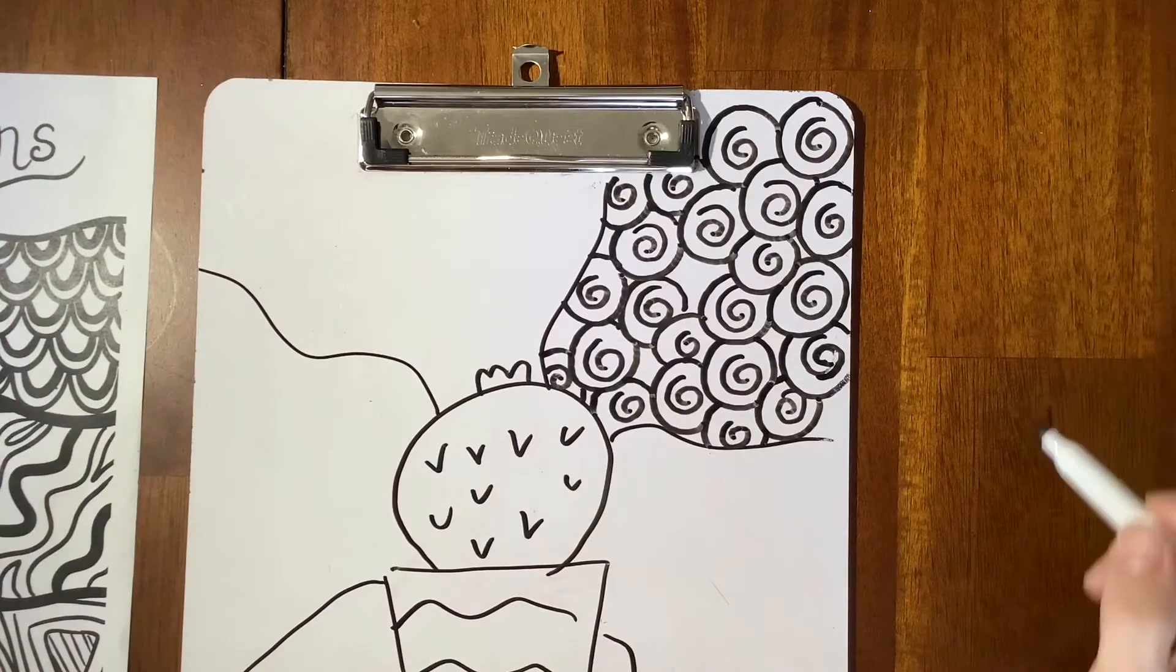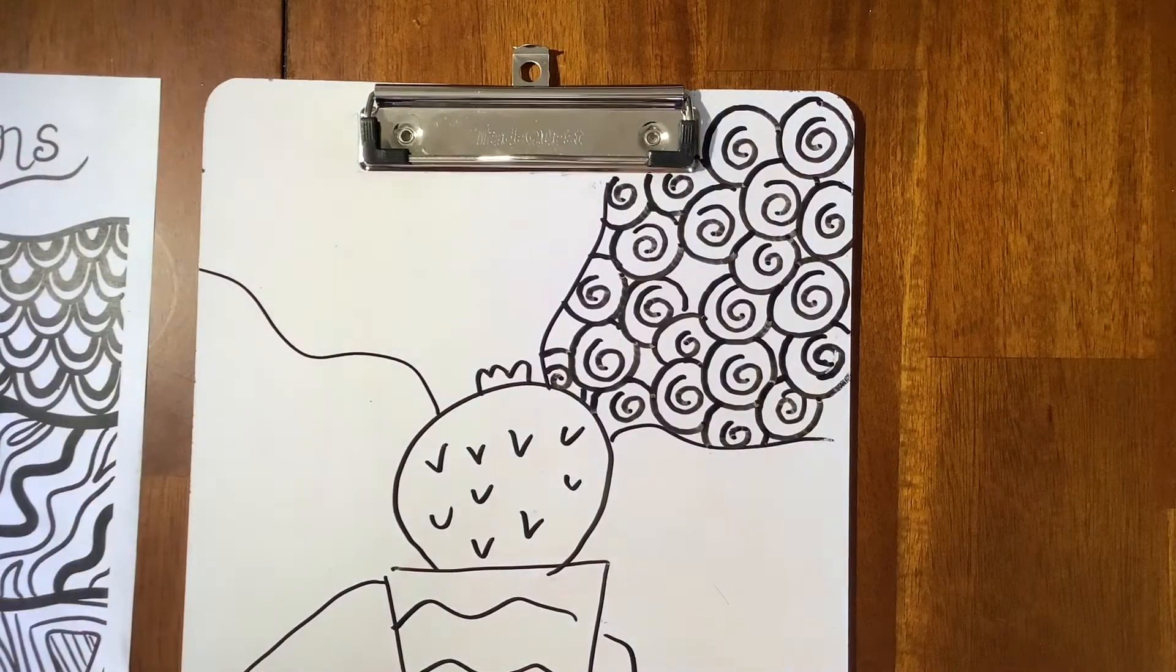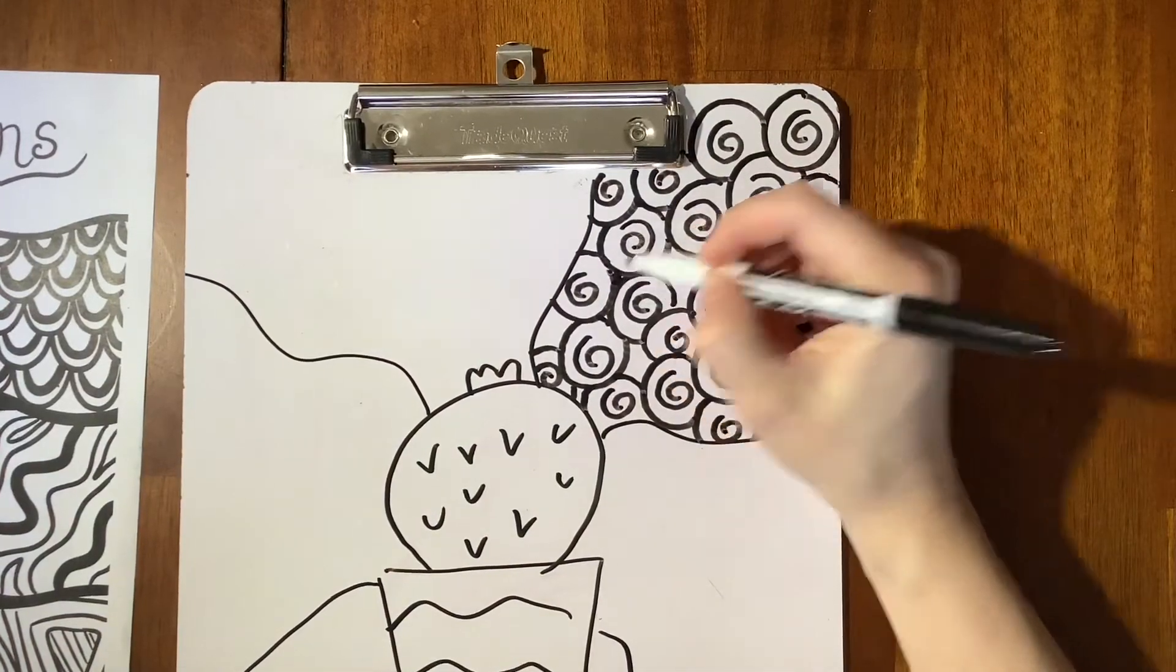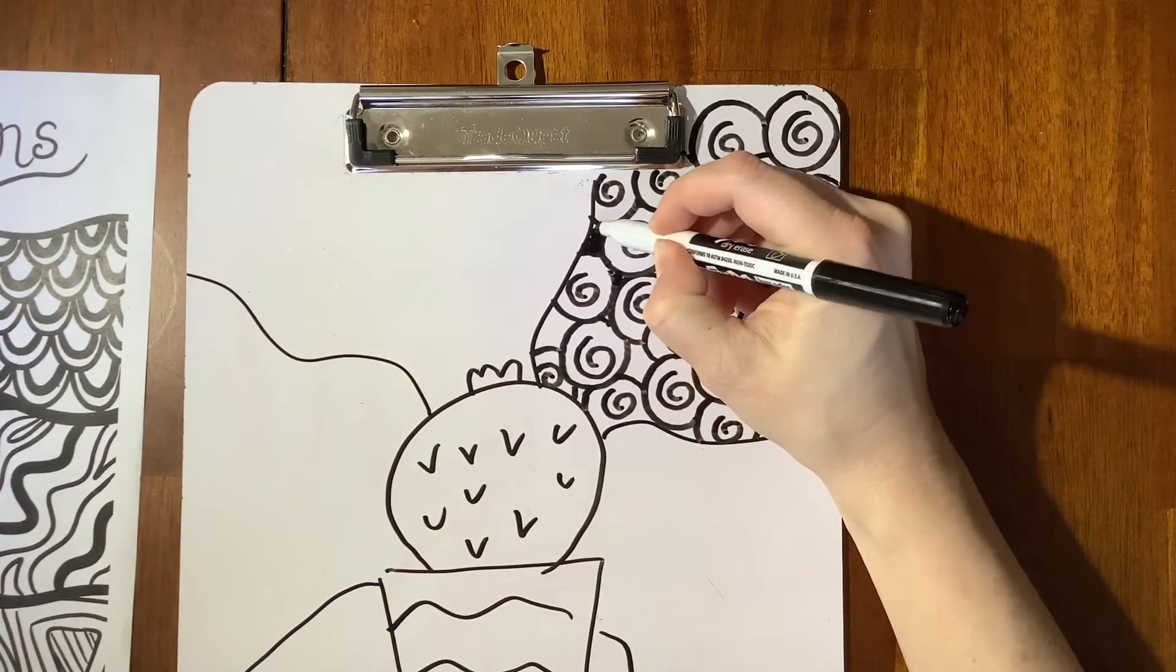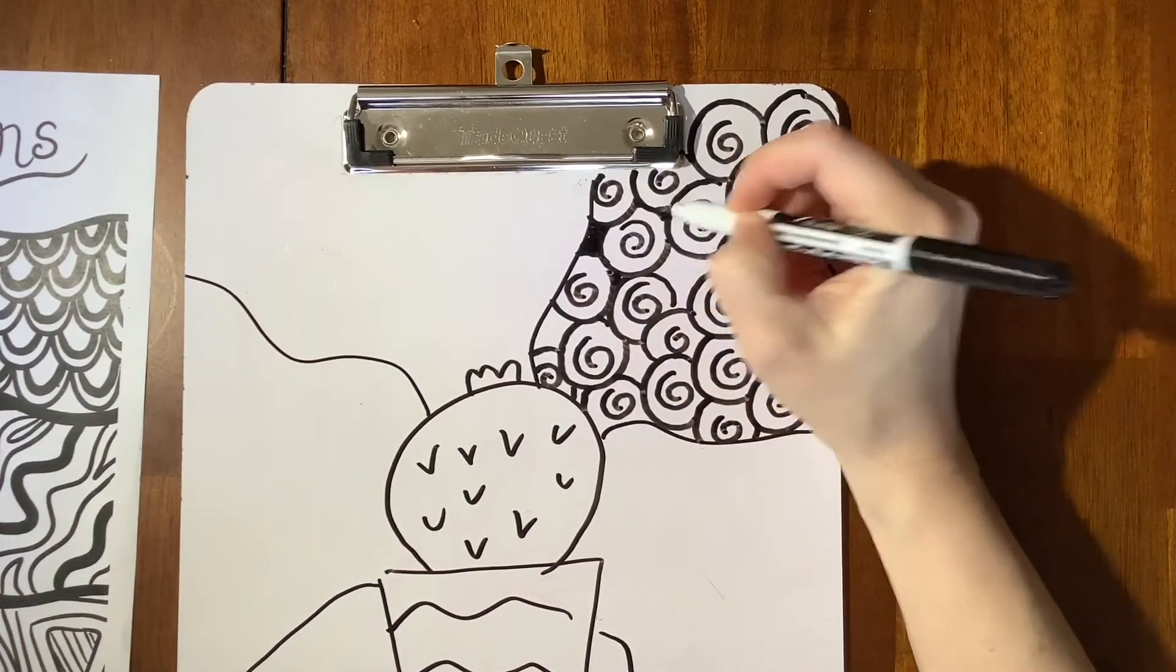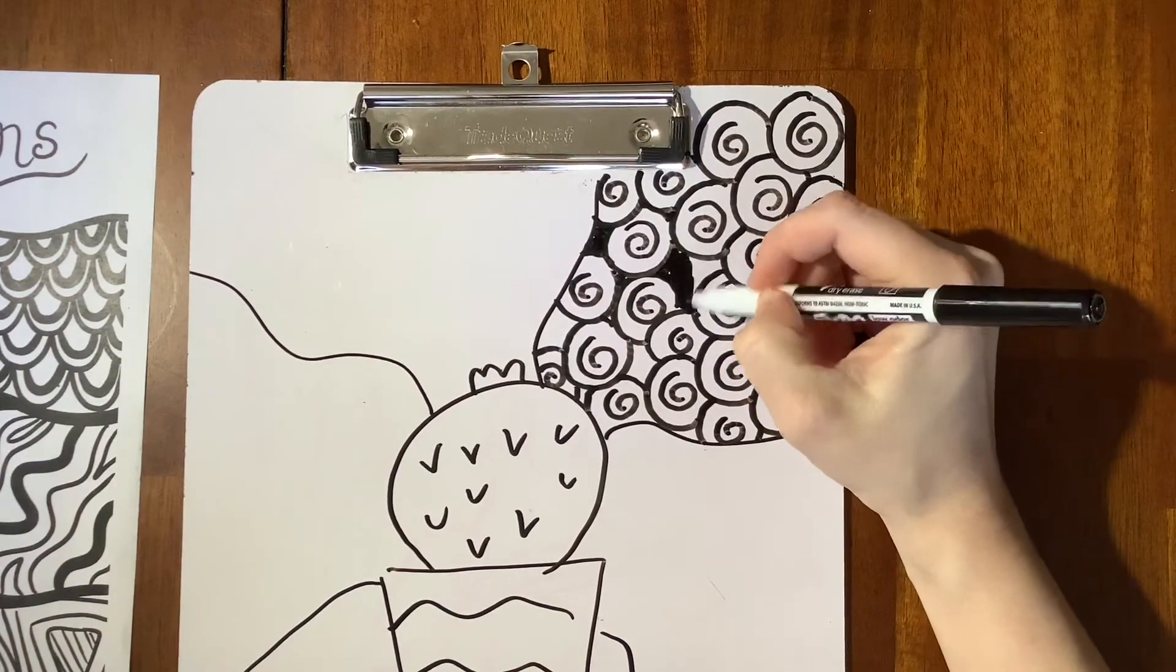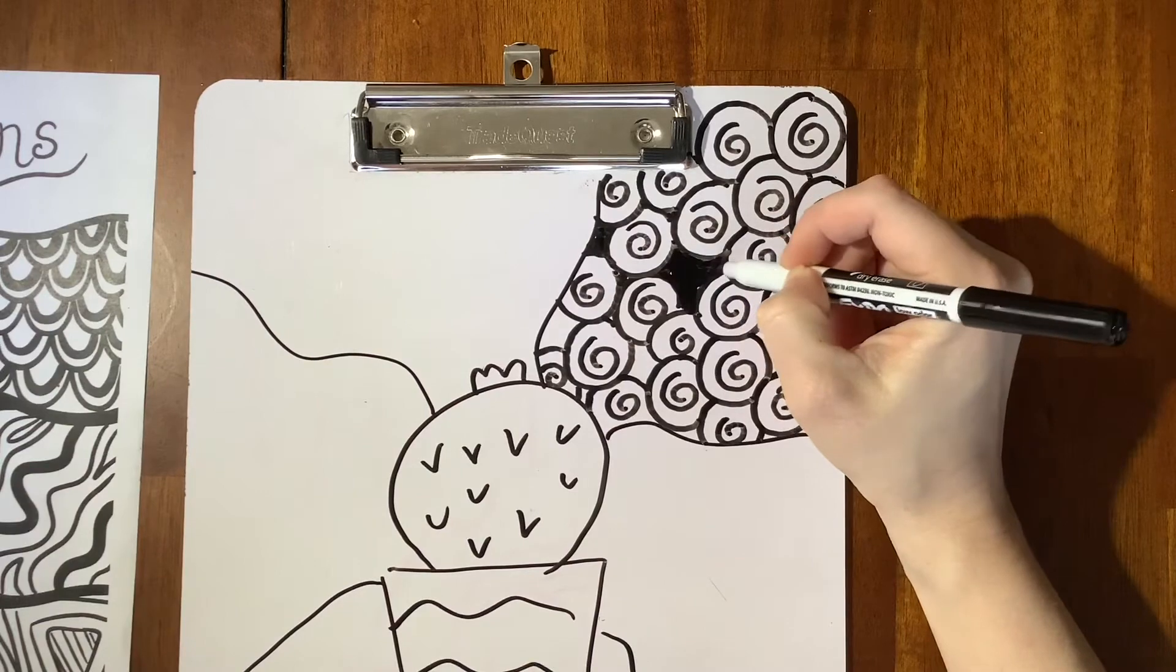Okay, so now that I have all of my circles around my swirls, everywhere that is not a circle, you're going to darken in. So this is why you want to have a lot of swirls because if you have a lot of blank areas, then that is a lot of coloring in that you have to do.